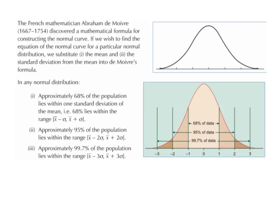We're going to look at De Moivre's theorem. The French mathematician Abraham de Moivre, who was alive from 1667 to 1754, discovered a mathematical formula for constructing the normal curve.